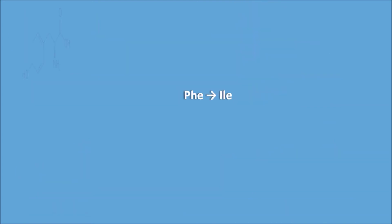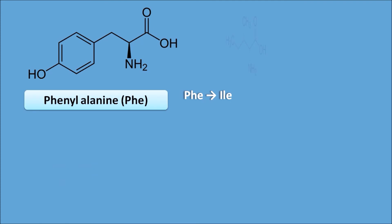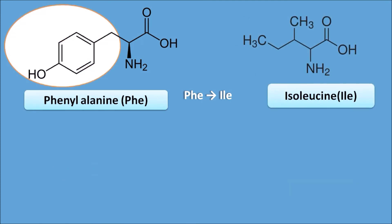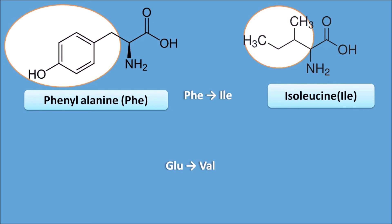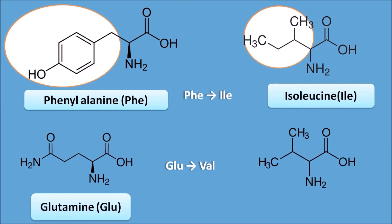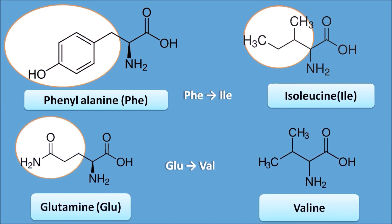For phenylalanine to isoleucine: phenylalanine has a relatively non-polar group, and isoleucine also has a non-polar group, so the greatest conformational change is not observed here. But for glutamine to valine: glutamine has a polar amide functional group, while valine has only a non-polar alkyl group. This polar amide group is converted to a non-polar functional group, resulting in the greatest conformational change in the protein structure. Glutamine and valine are not equivalent and do not produce the same polarity in the protein structure, making glutamine to valine the right answer.